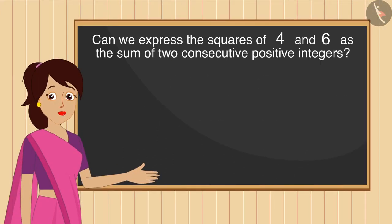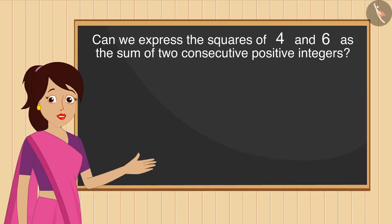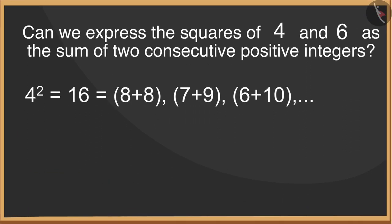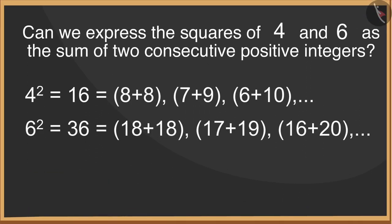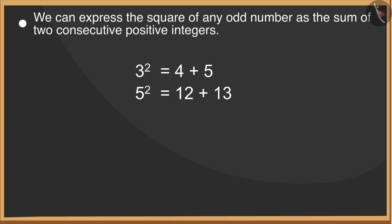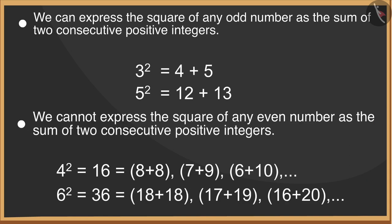Can we also express the squares of four and six as the sum of two consecutive positive integers? You are absolutely right — we observe that we cannot express the square of numbers four and six in this way. That is, we can express the square of any odd number as the sum of two consecutive positive integers, but we cannot express the square of any even number in this way.